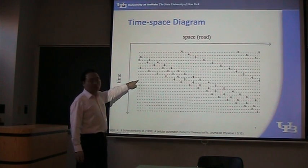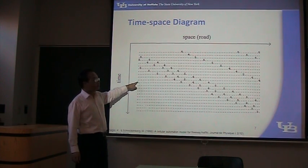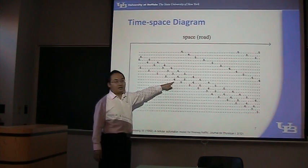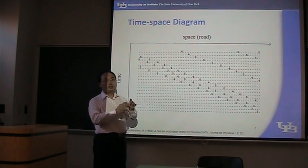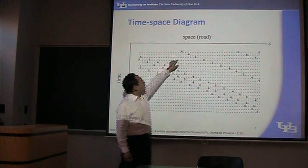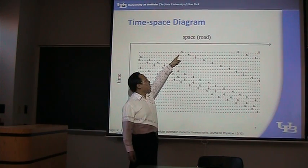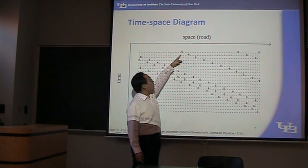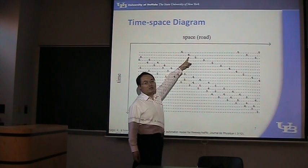In this diagram, if it's a dot, that means the cell is unoccupied. If it's a number, then the number indicates the speed of the vehicle occupying that cell. For example, a vehicle is occupying this cell and the speed is 4. So in the next step, it will move forward 4 cells.